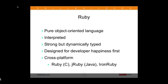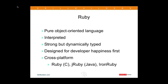One of the biggest advantages to Ruby is that it's cross-platform. We have an interpreter written in C, but we can also run Ruby applications on the JVM using JRuby, and the IronRuby project allows us to write Ruby applications on the .NET framework.